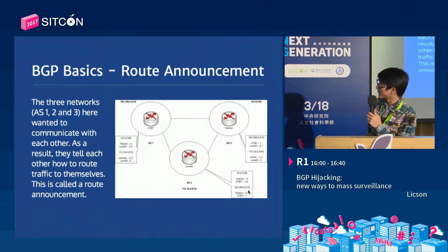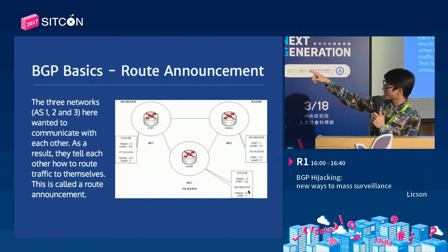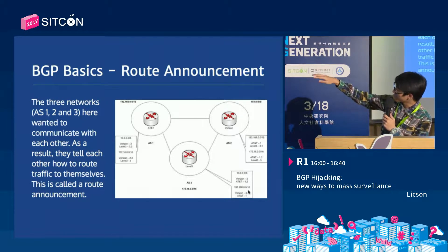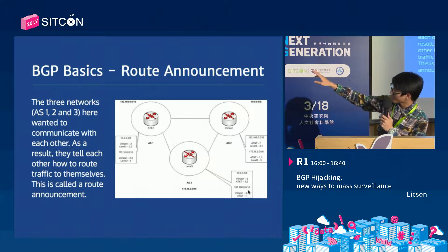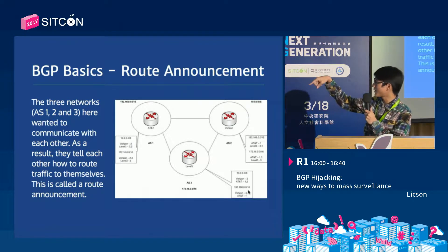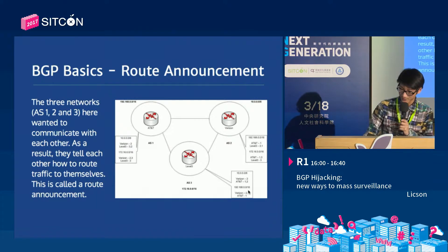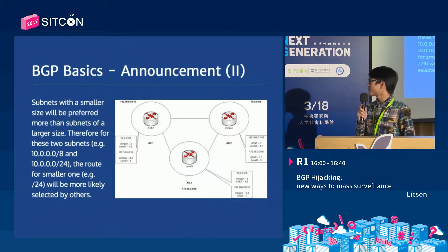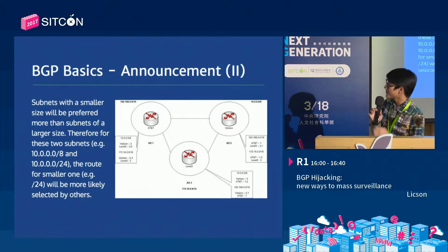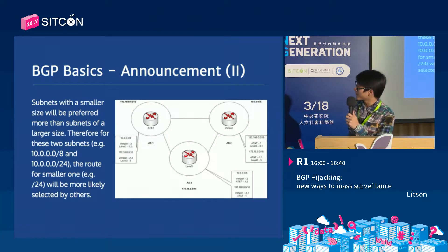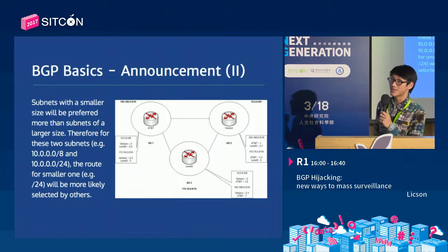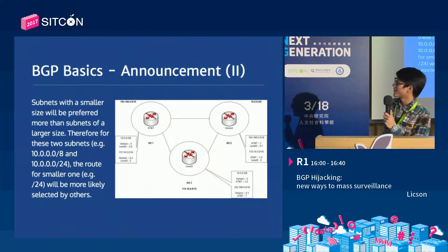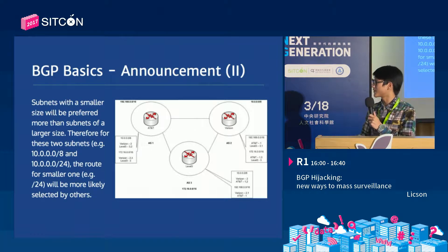AS1 has a connection to AS2 and AS3, so AS2 and AS3 will know they have direct connectivity to AS1. But as AS2 knows about its connectivity to AS1, AS2 will also tell its remaining connections - in this case AS3 - that they have another route to AS1. They will finally form a meshed network, like a triangle. Subnets with a smaller size will be preferred more than subnets of a larger size. This means that if AS1's network 10.0.0.0/8 is cut into smaller segments, those smaller segments will be preferred by routers over the bigger segment, because the smaller segment is more specific to the destination.